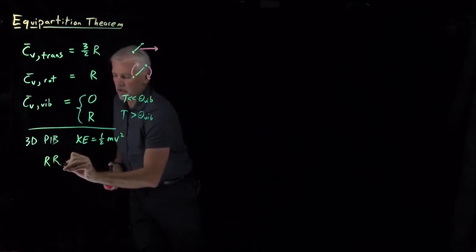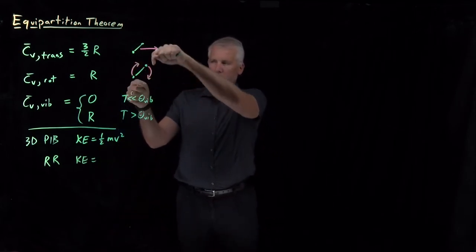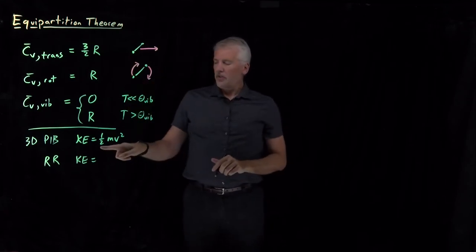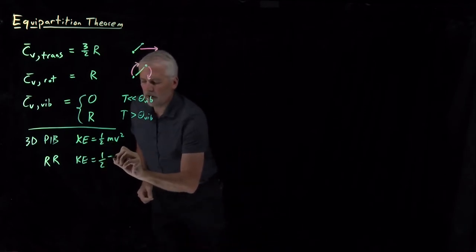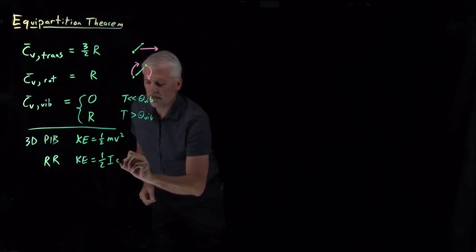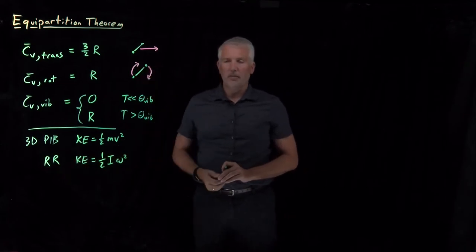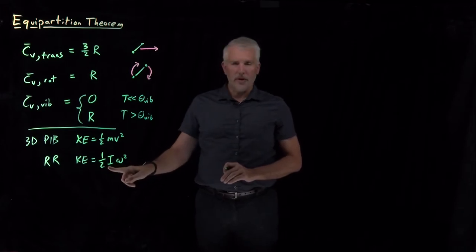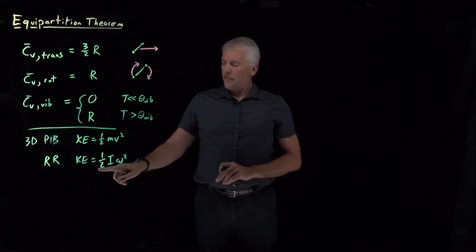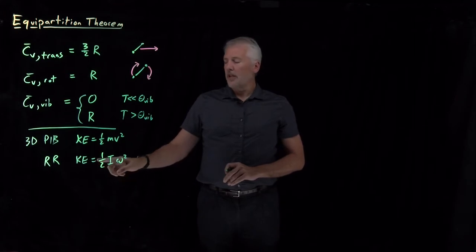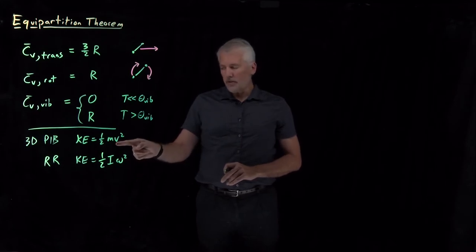The rigid rotor has kinetic energy. We could think of it in Cartesian coordinates as the velocities of each atom moving in different directions. To make the analogy clearer, if you remember from a physics course, you can describe the kinetic energy of a rotating molecule — specifically a rigid rotating object — as one-half its moment of inertia times the angular velocity squared. These two equations look very similar: the kinetic energy has the same form of some constants times something squared, whether it's a velocity or an angular velocity.